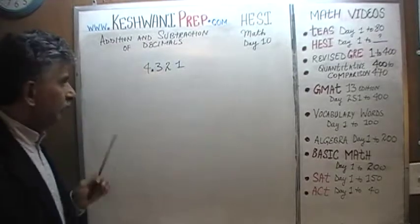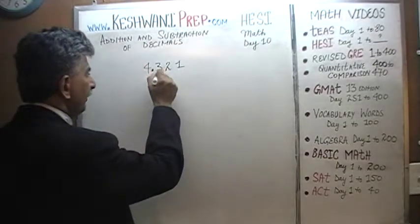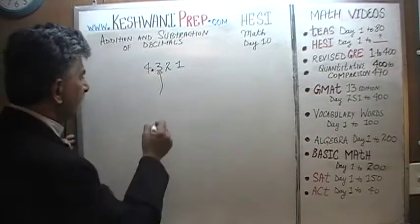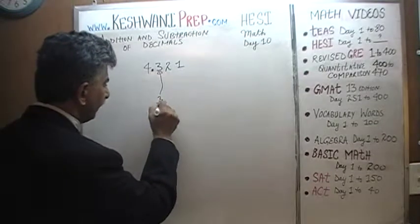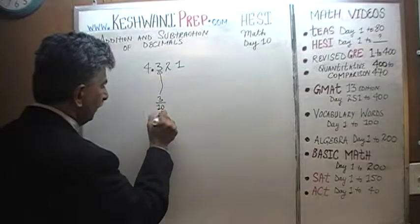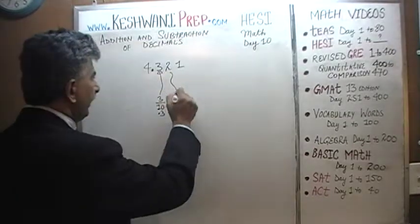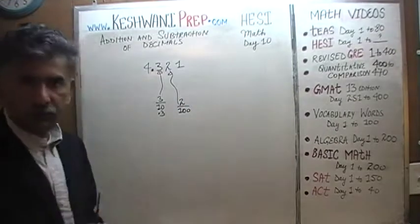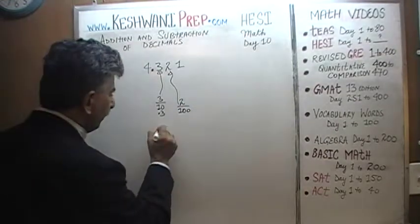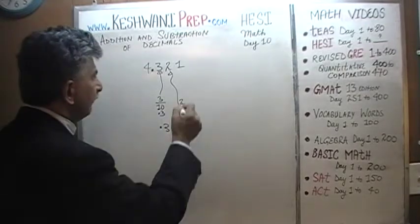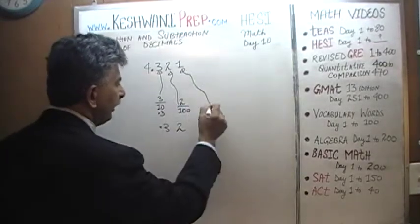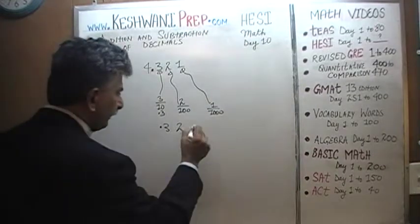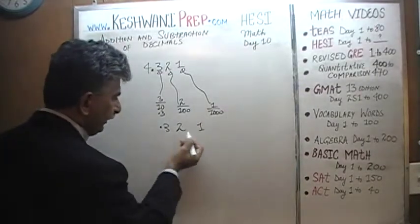What does 3 represent? Well, because of the fact that it comes after the decimal, it tells us how many tenths we have. We have 3 tenths — that's why 0.3. This 0.2 represents that we have 2 one-hundredths. And then finally, this 1 tells us that we have 1 one-thousandth. And hence, 0.321.